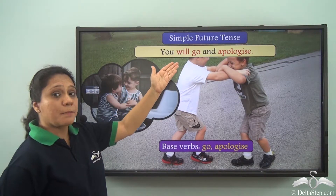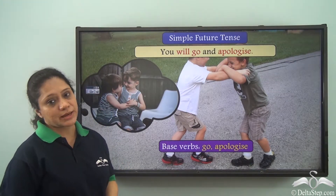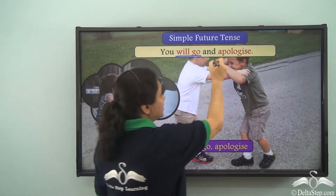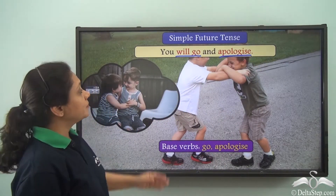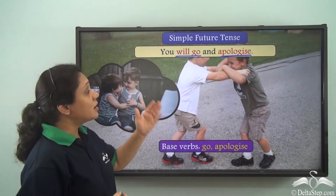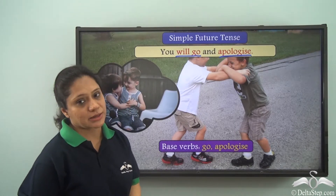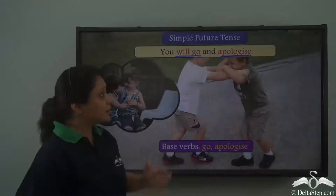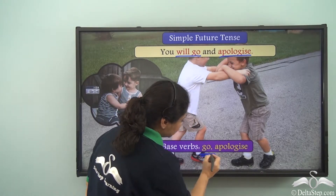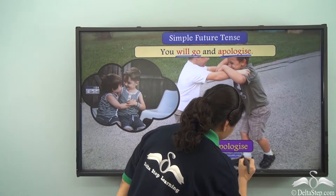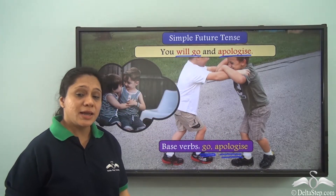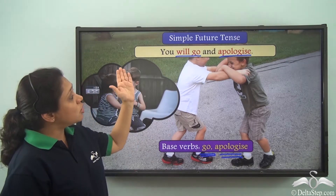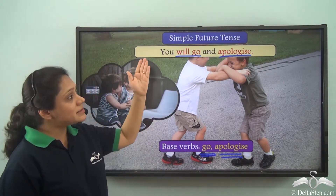You will go and apologize. There are two verbs in this sentence: 'will go' and 'apologize.' You usually use 'will' just once — you do not say 'you will go and will apologize.' Will go is formed from the base verb 'go,' and 'apologize' is used as the base verb. This sentence is giving us an instruction about something to do in the future, so it is in the simple future tense.